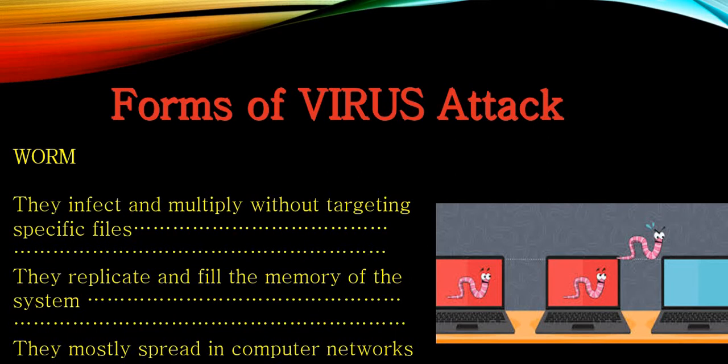Something is called a worm. Worms infect and multiply without targeting any specific file, but they replicate and fill the memory of the computer system. The entire computer memory gets the same file in many copies. They mostly spread in computer networks because there are so many computers to spread to, and their task is to keep making their own replica and fill the computer memory with the same virus.